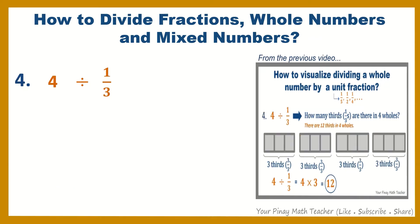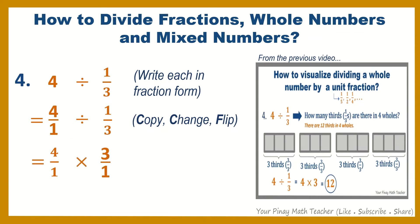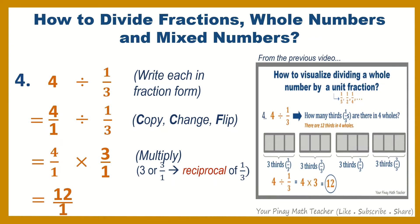Number 4: 4 divided by 1 third. 4 becomes 4 over 1, divided by 1 third. Then the 3 steps — copy, change, flip: copy 4 over 1, times 3 over 1, and then multiply. 3 over 1, or 3, is the reciprocal of 1 third. We get 12 over 1, which is simply 12.